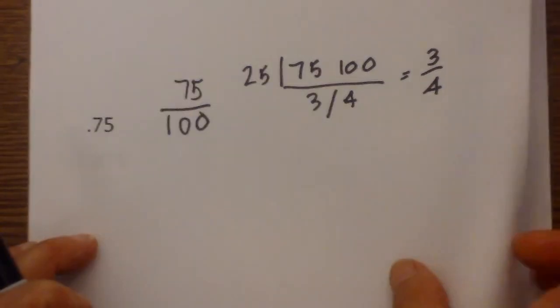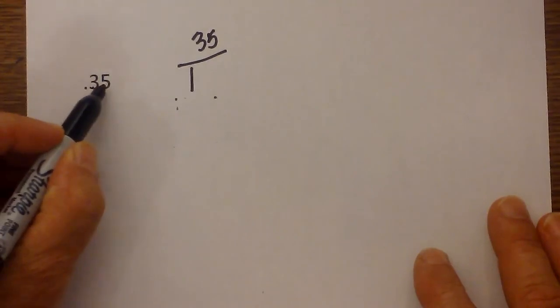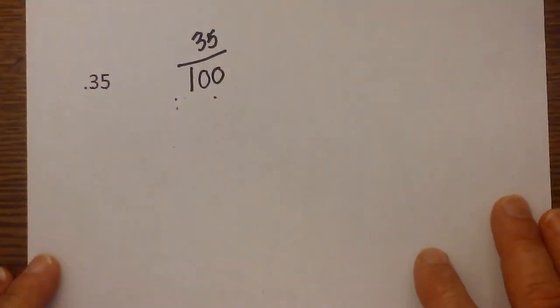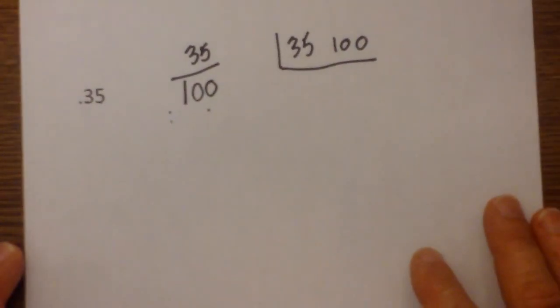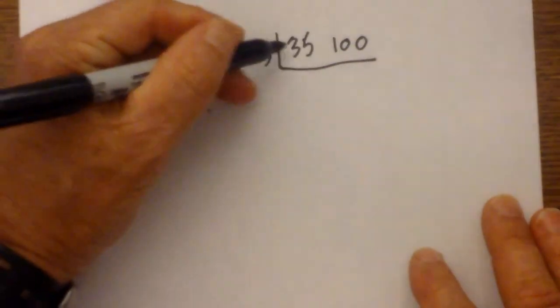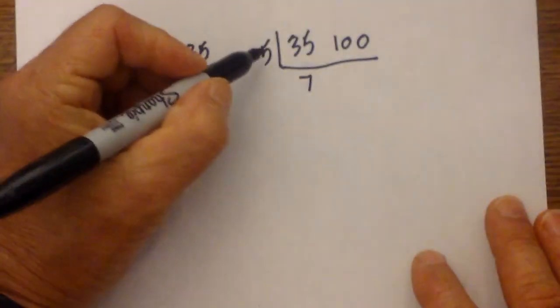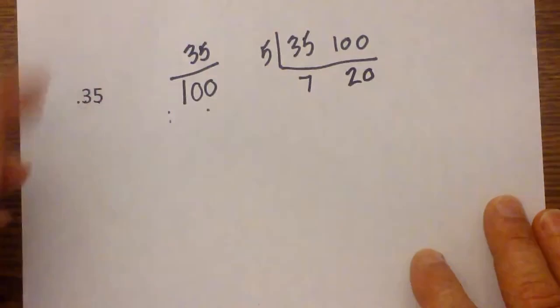Let's work another example using this shortcut method. We have 0.35. I write a 35 and place it to create a fraction. Write down a one. I have one, two numbers to the right. I then need to simplify. I'm going to write 35 and 100 next to each other. In this particular example I know that five will go into it, so I put five on the outside. Five goes into 35 seven times and five goes into 100 twenty times.